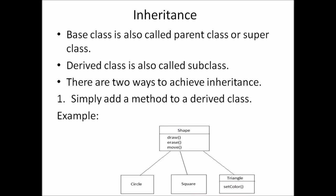There are two ways to achieve inheritance. One is to simply add a method to a derived class. For example, circle, square and triangle are derived classes which inherit all the methods draw, erase and move from the base class shape. But triangle adds one more method along with it — set color. This is one way of achieving inheritance.